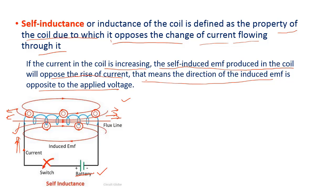In the case of self induction, we need only one coil, and that coil produces the induced EMF by its own circuit. We call this the self induced EMF or self induced current. Mathematically, we know that phi is directly proportional to I.